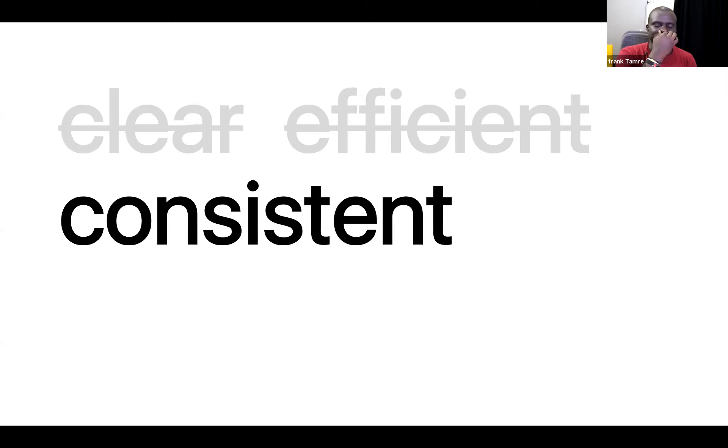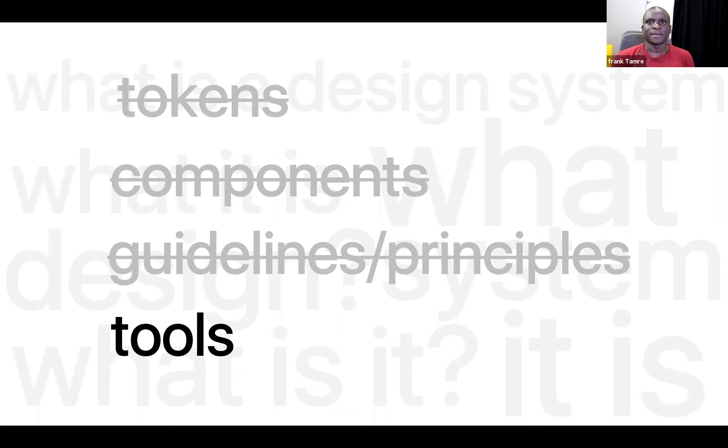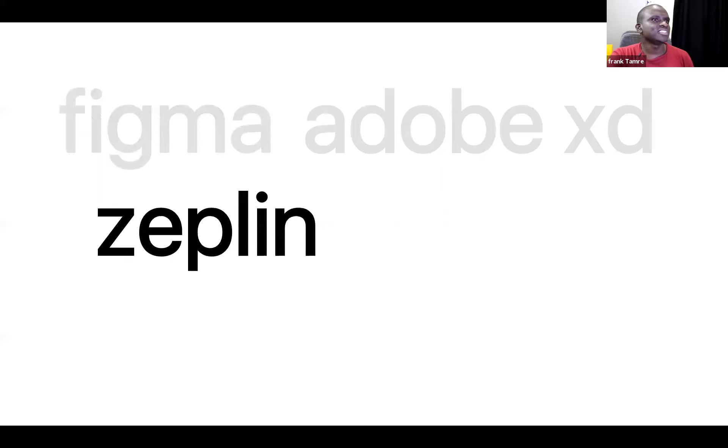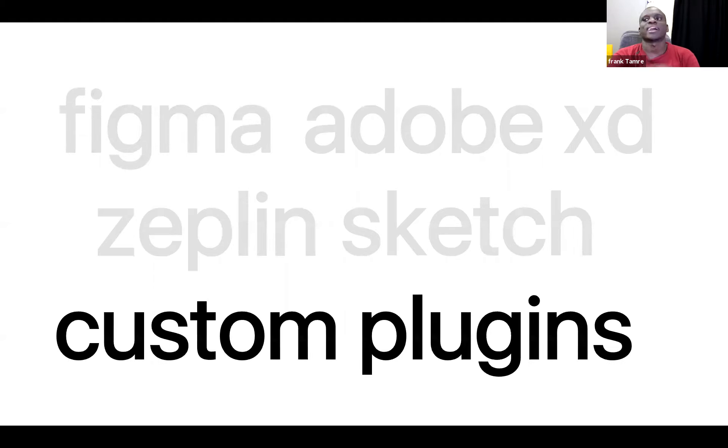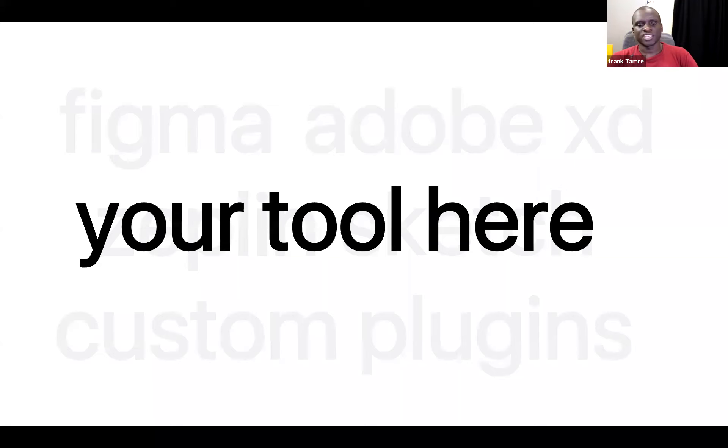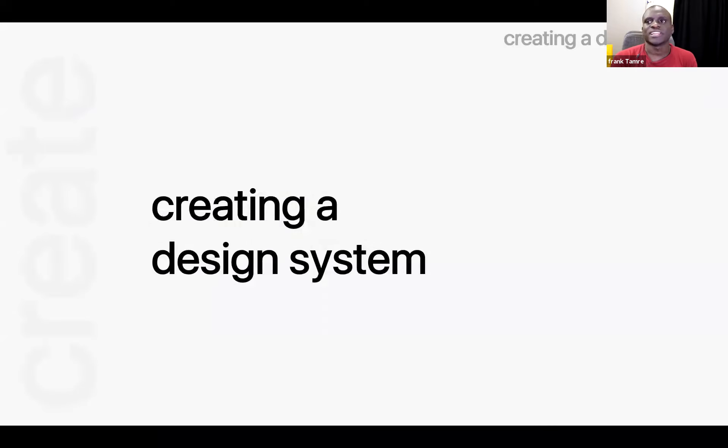The fourth element characterizing a design system is the tools. Are you using Figma, Adobe XD, Zeppelin, Sketch, custom plugins for any of those, or Photoshop? The last and very important tool is whatever enables communication between developers and designers. Now that we've talked about what a design system is, how do you create one?